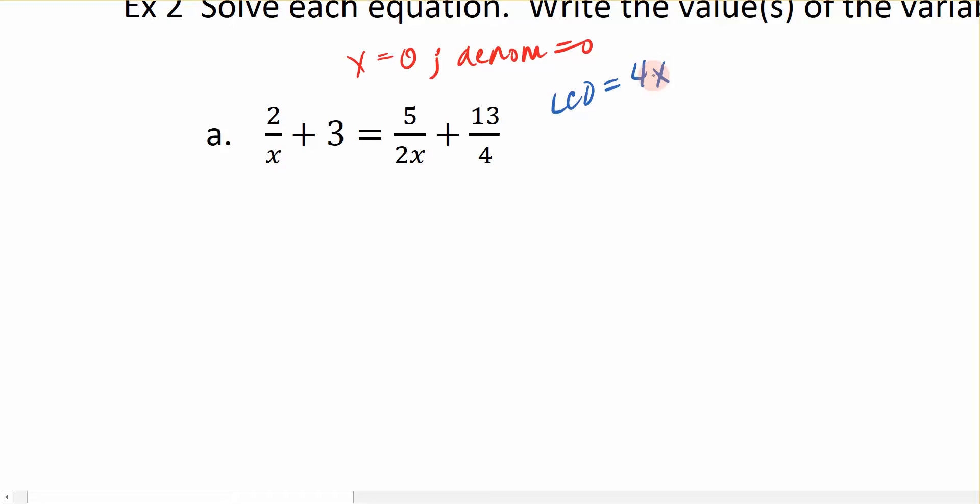Because x divides into 4x, 2x divides into 4x, and 4 divides into 4x. So this is the least common denominator. It's basically a combination of the denominators that you already see here.